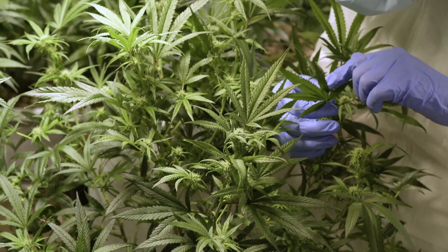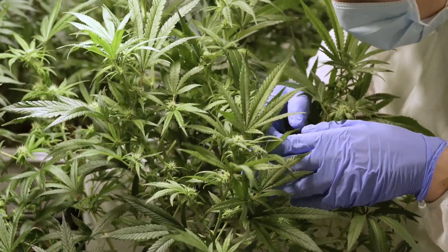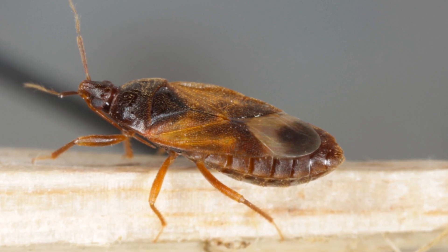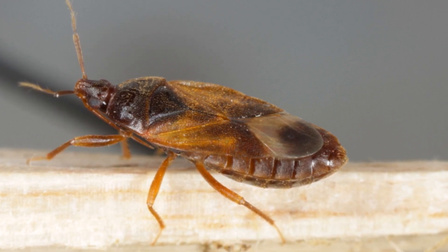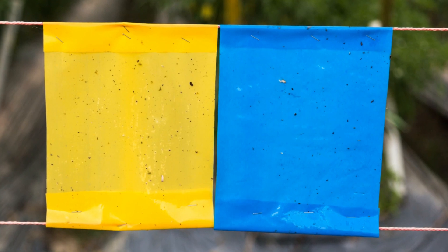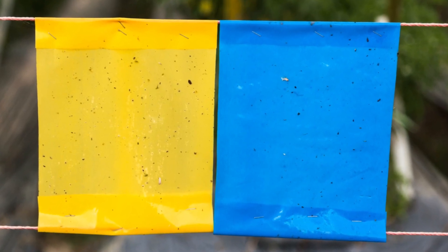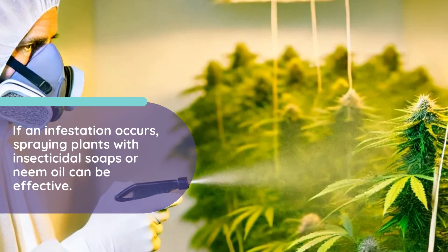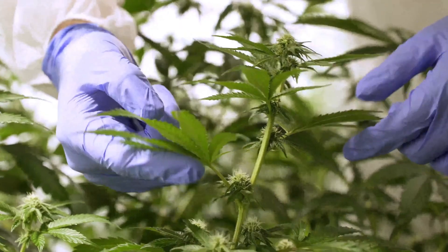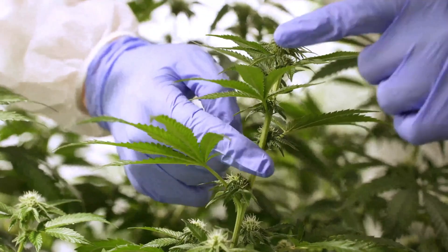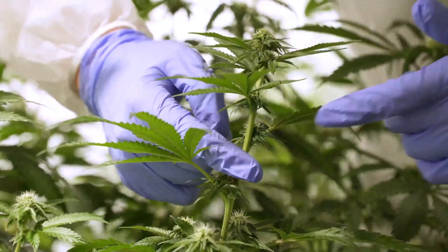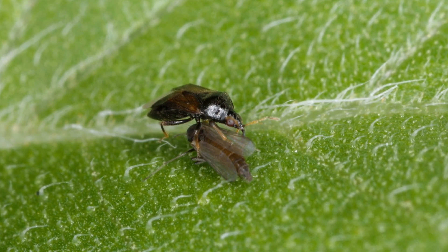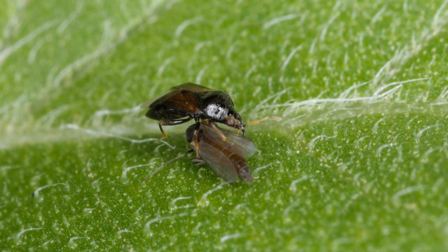Preventing thrips involves regular monitoring and maintaining a clean grow area. Introducing predatory insects such as minute pirate bugs and predatory mites can help control thrip populations. Using blue sticky traps can also help monitor and reduce thrip numbers. If an infestation occurs, spraying plants with insecticidal soaps or neem oil can be effective. Ensuring thorough coverage of all plant surfaces, including the undersides of leaves, is essential. Biological control agents like predatory insects can provide long-term management of thrips.